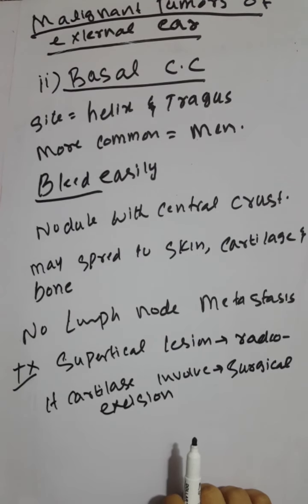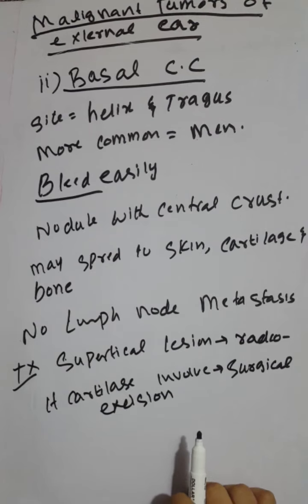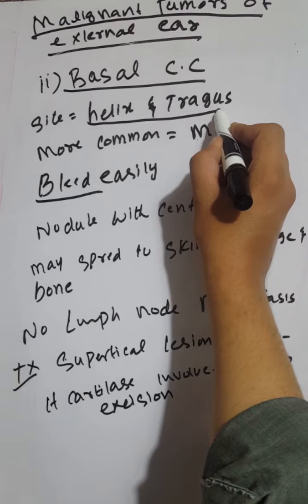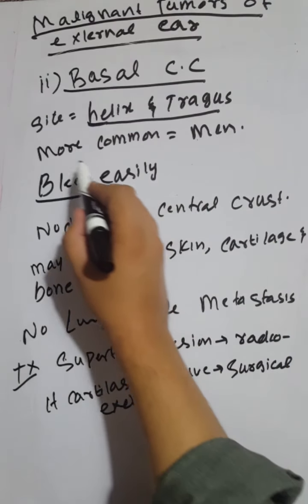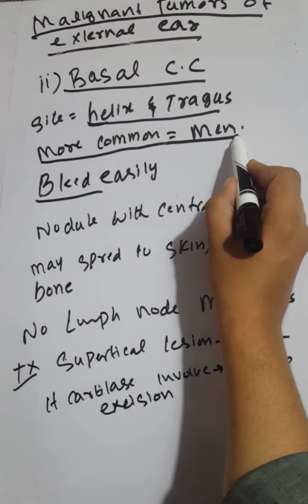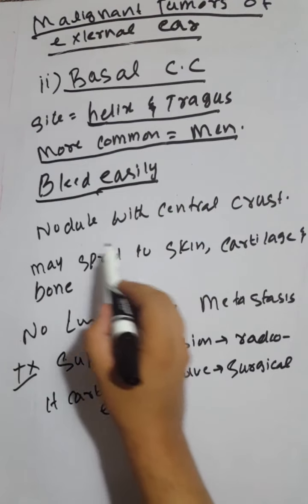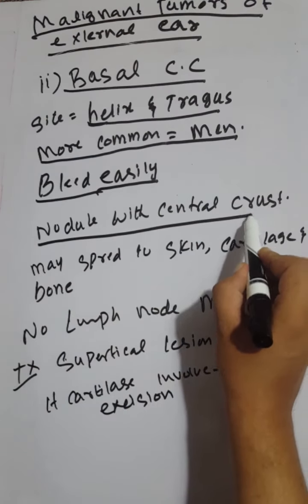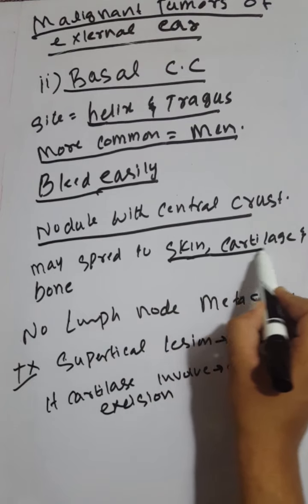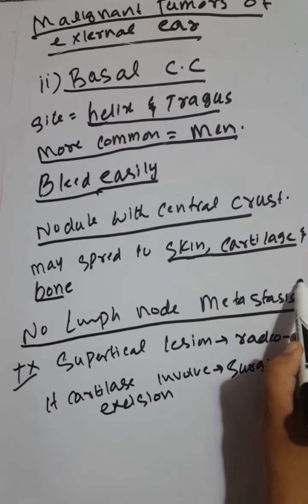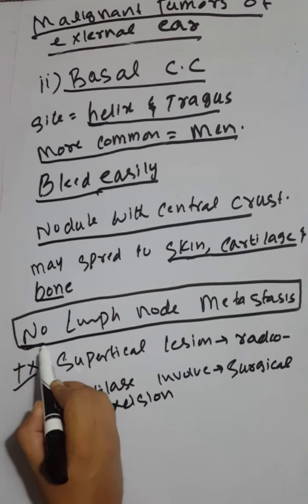The second malignant tumor of the external ear is basal cell carcinoma. The sites for basal cell carcinoma are the helix and tragus, whereas squamous cell carcinoma involves only the helix. Basal cell carcinoma is more common in men, similar to squamous cell carcinoma. They bleed easily and present as a nodule with a central crust. They may spread to the surrounding skin, cartilage, and bone. No lymph node metastasis occurs in basal cell carcinoma, whereas lymph node metastasis does occur in squamous cell carcinoma.